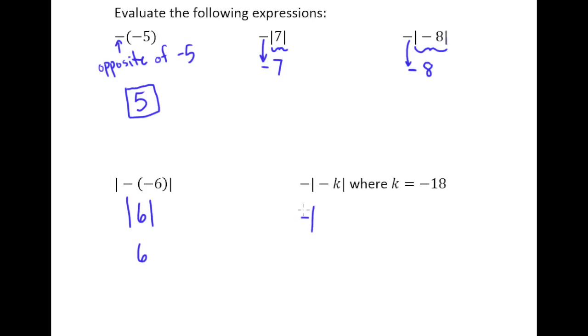That negative is there from the original expression. That absolute value bar is there from the original expression. This negative is there from the original expression. And then I'm supposed to plug negative 18 in for k. And then close that absolute value bar.